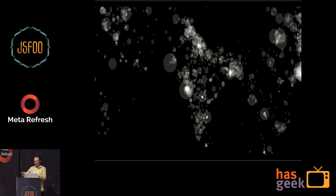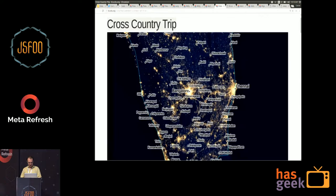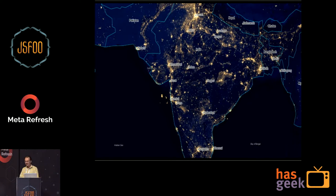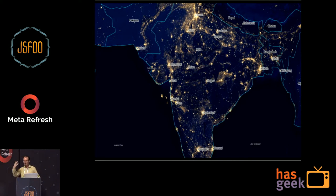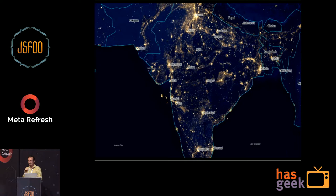A better proxy for where people are is this awesome data from NASA — the Earth at Night. This is using D3 as well, using a module called D3 tile that lets you make tile-based maps. Now you can see much more detail about where people are on the surface of the Earth. This is the light coming out of the Earth at night picked up by NASA satellites, released as public data. I used D3 to add a map tile provider for labels as a layer on top.